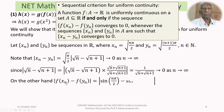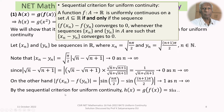However, |F(Xn) − F(Yn)| = |sin(nπ/2) − sin((n+1)π/2)|. Since one of these values is 1 and the other is 0, the modulus equals 1 and tends to 1 as n → ∞ — it does not tend to 0. By the sequential criteria for uniform continuity, H(x) = g(f(x)) = sin(x²) is not uniformly continuous on R. Hence option 1 is not true.